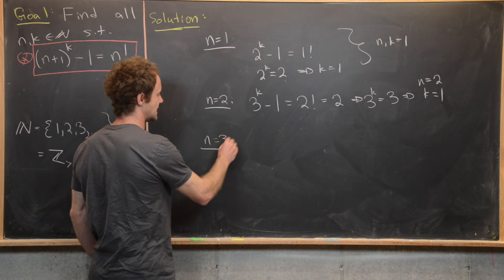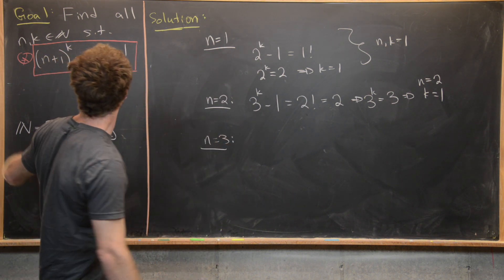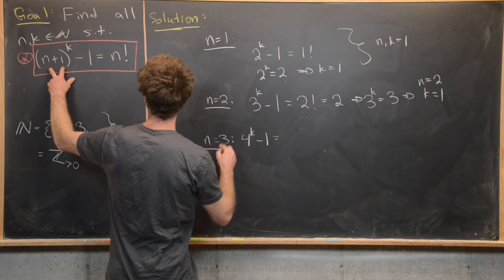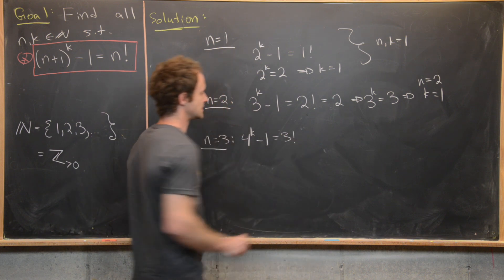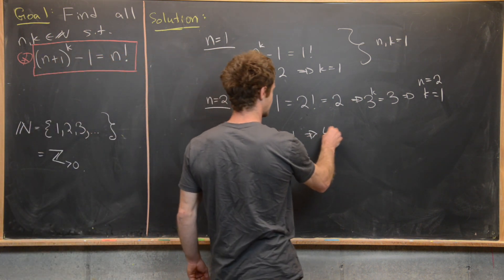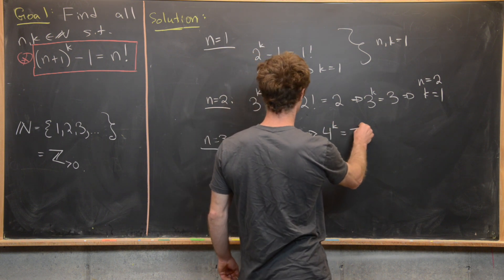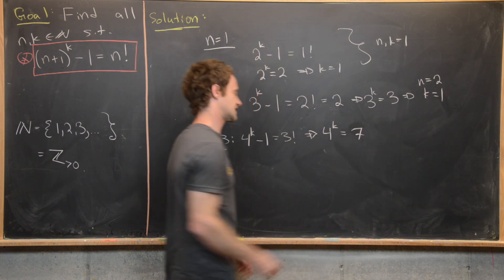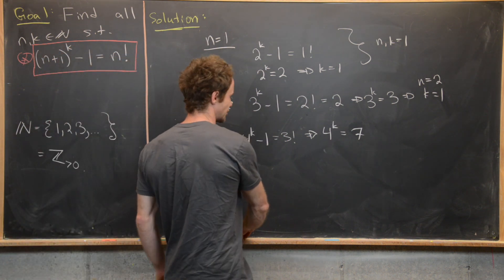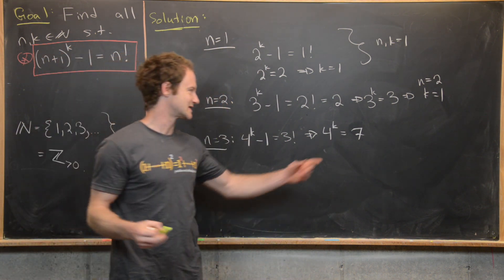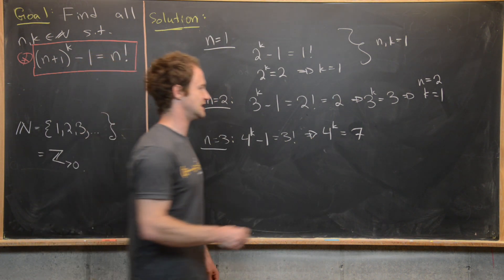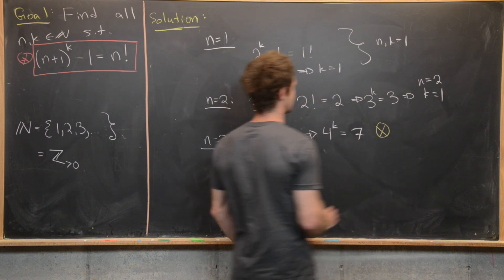For n=3, we have 4^k - 1 = 3! = 6, so 4^k = 7. There's obviously no solution here — the left-hand side is even and the right-hand side is odd. So no solution in this case.